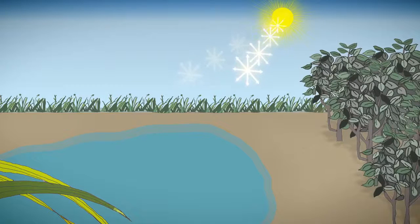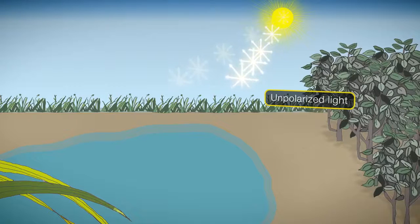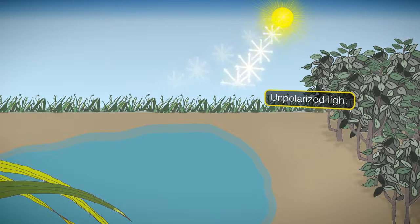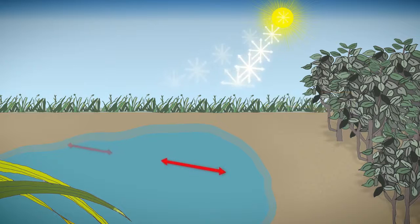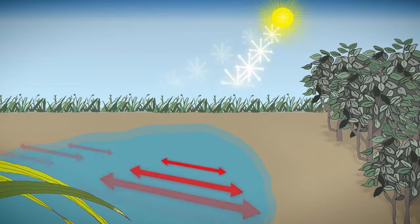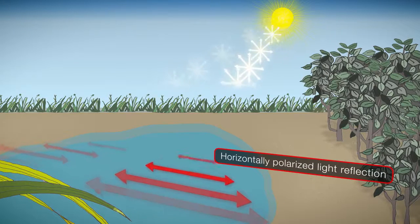Direct sunlight is unpolarized light including various e-vectors. But once the sunlight reflects off small particles, objects, and water bodies, a part of the reflected light is linearly polarized in which a certain e-vector orientation is dominant. In particular, the reflection of water bodies is horizontally polarized.